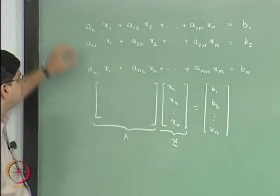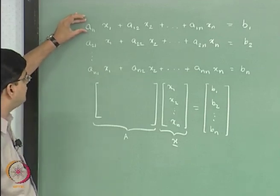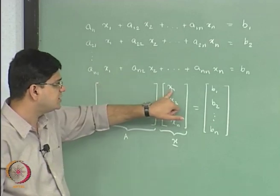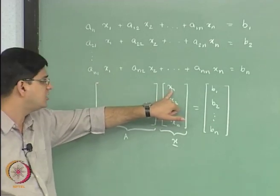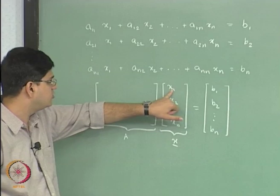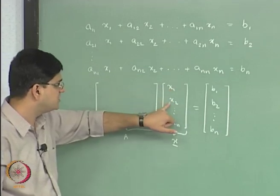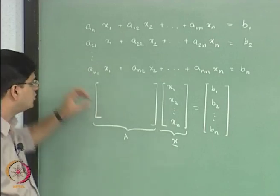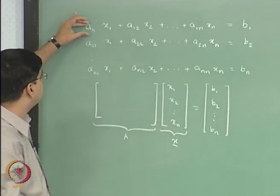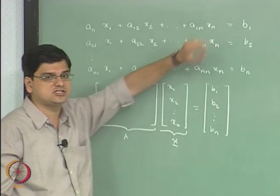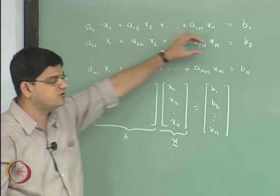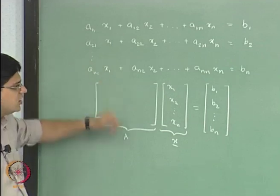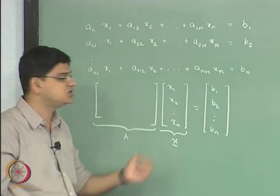Now, how do we populate this matrix? The first (1,1) element is going to multiply with the first variable, the second element will multiply with the second variable, the third element will multiply with the third variable, and so on. So the first row will contain all the coefficients in the first equation, the second row will contain the coefficients in the second equation, and so on. The ith column will represent the coefficient of the ith variable.